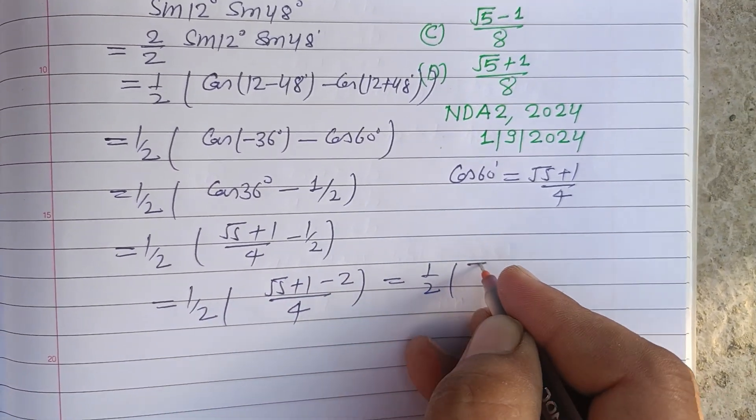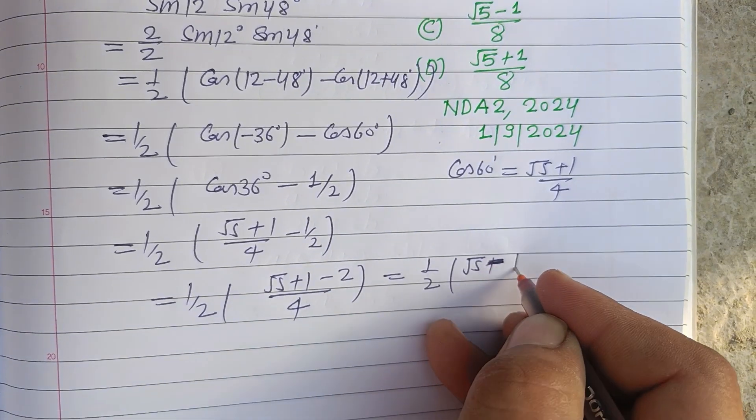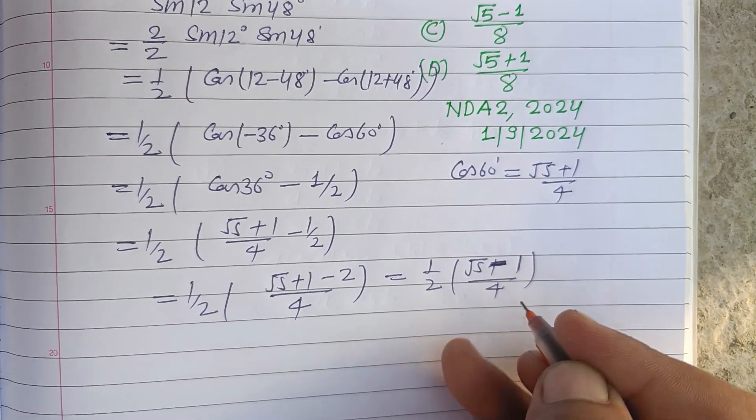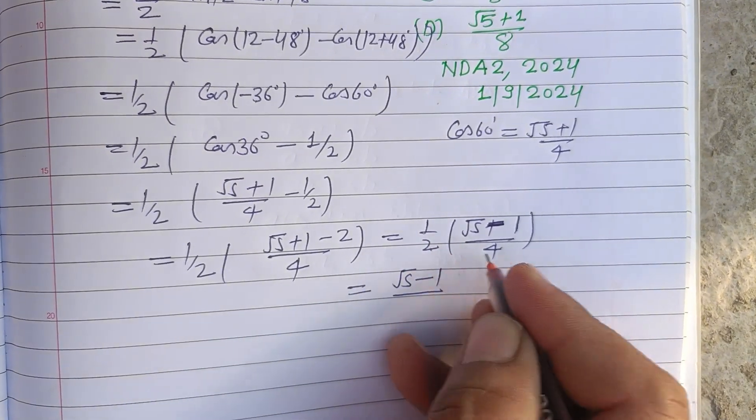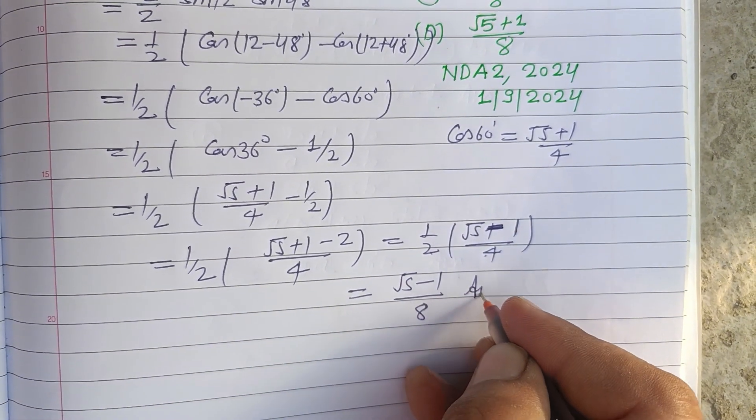1/2 times √5 minus 1 upon 4. Therefore the answer is (√5 - 1) upon 8. So this is our answer,